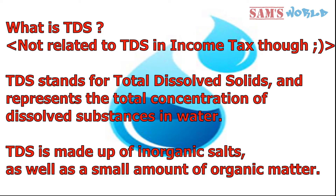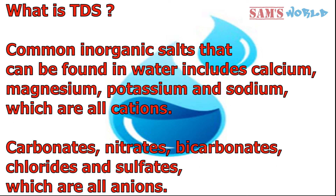Before I show you what a TDS meter is and how it works, let's find out what TDS is. TDS here doesn't mean the income tax TDS — it means total dissolved solids, and it represents the concentration of dissolved substances in water. TDS is mainly made up of inorganic salts as well as a small amount of organic matter. The common inorganic salts found in water include calcium, magnesium, potassium, and sodium, which are called cations, and carbonates, nitrates, and bicarbonates, which are known as anions.